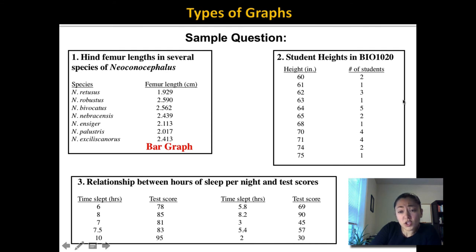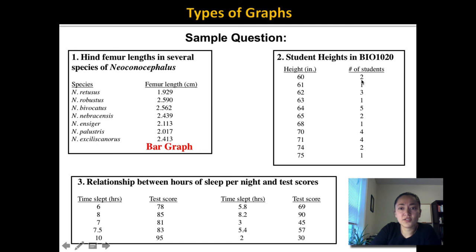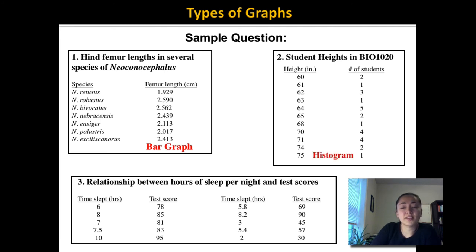Notice how a histogram differs from a bar graph: a bar graph has categories on one axis, whereas a histogram has numbers on both axes and the y-axis has the count or frequency of something. On the histogram you can actually group numbers on the x-axis together — for example, looking at the number of students with a height between 60 and 65, or between 66 and 70, or between 71 and 75, and graph it like that.